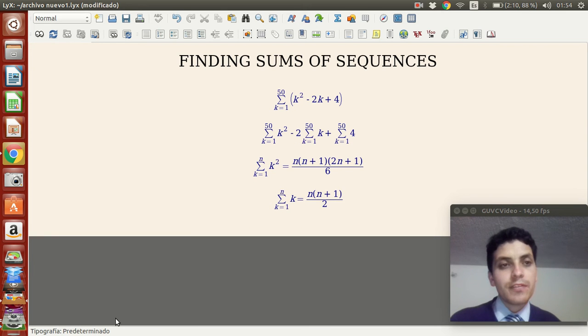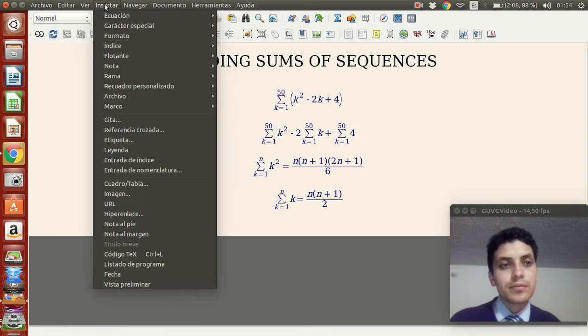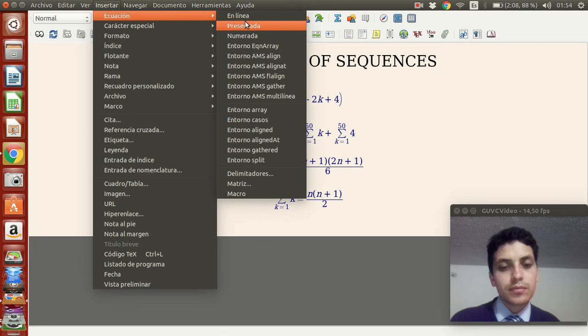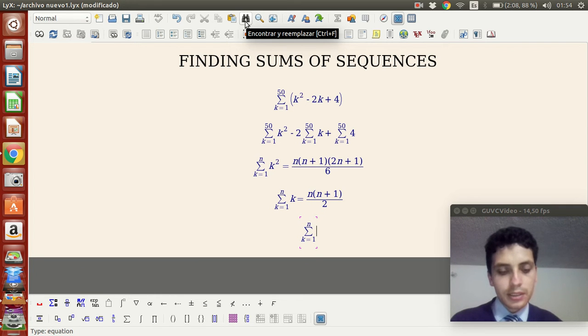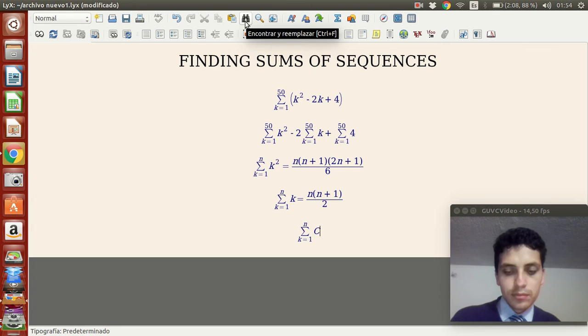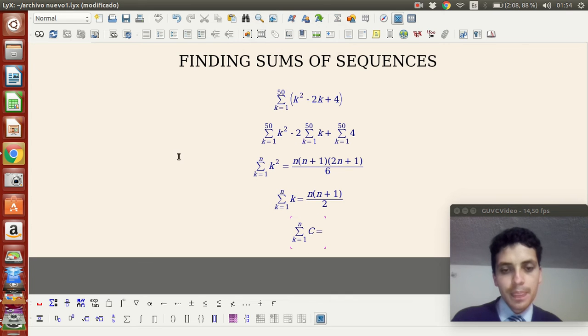And finally, if we have this sum with a constant c, k is the counter in a sequence. The counter is like the variable of the function. Remember that a sequence is just a function whose domain is an integer, so k is like the independent variable.